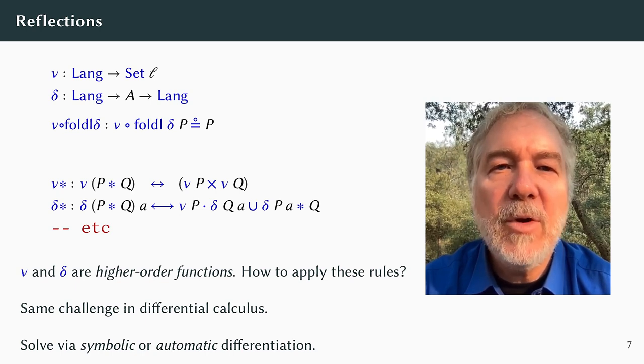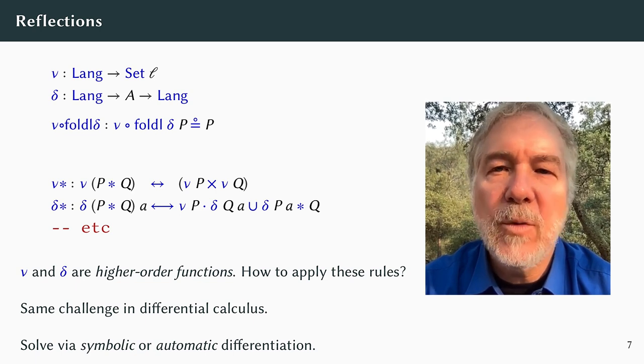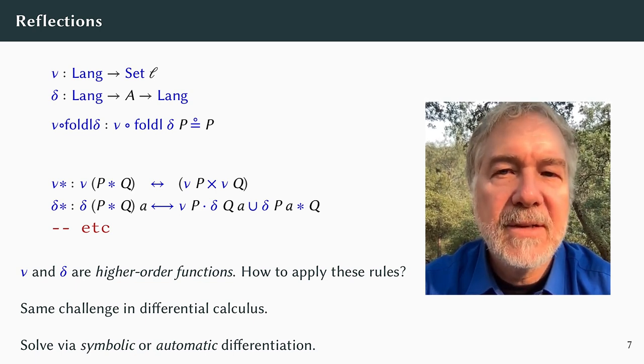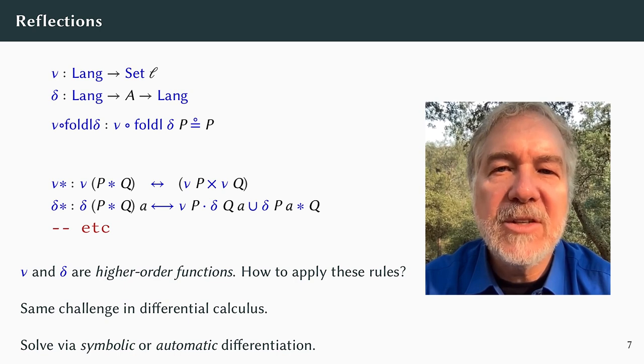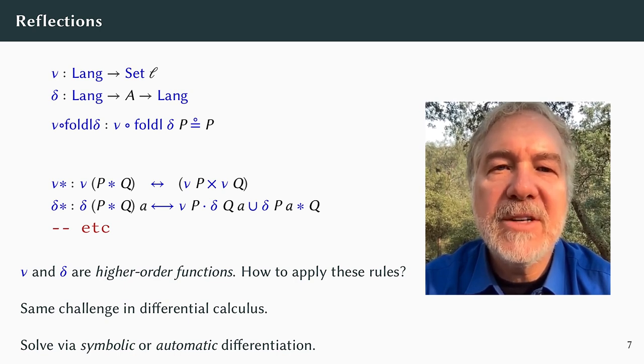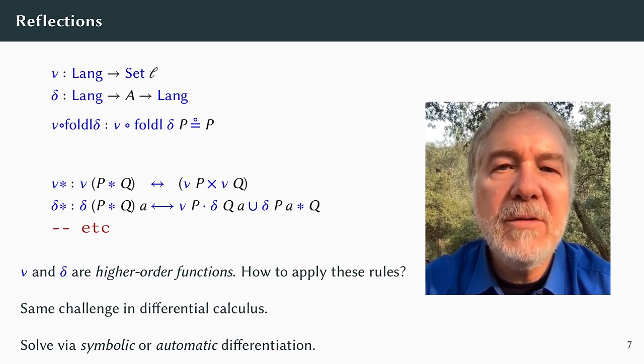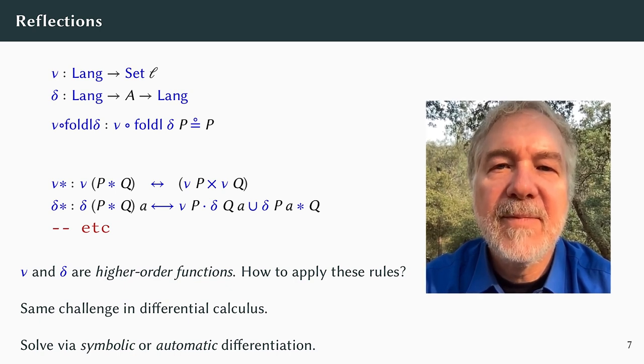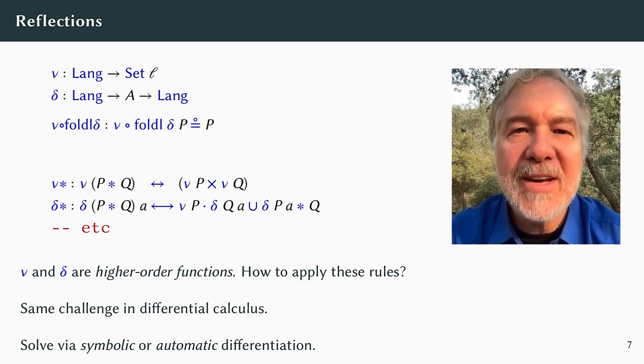Symbolic differentiation represents functions structurally, and applies the differentiation rules by pattern matching. Automatic differentiation represents differentiable functions as functions that compute their derivatives in addition to their regular values. We can apply these same strategies to languages.